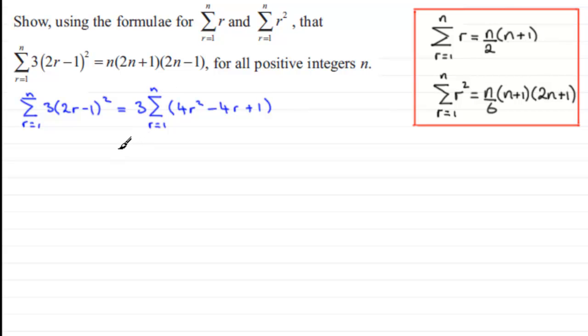And this summation then is going from r equals 1 to n. Next I want to start to multiply 3 with each one of these terms and just break it up. So what we're going to get is 3 times the 4 which is 12 and then we've got sigma of r squared. And then for the next one we're going to have minus 12 multiplied by sigma r. And for the last one we're going to have plus 3 times sigma 1. And all of these summations go from r equals 1 all the way up to n.